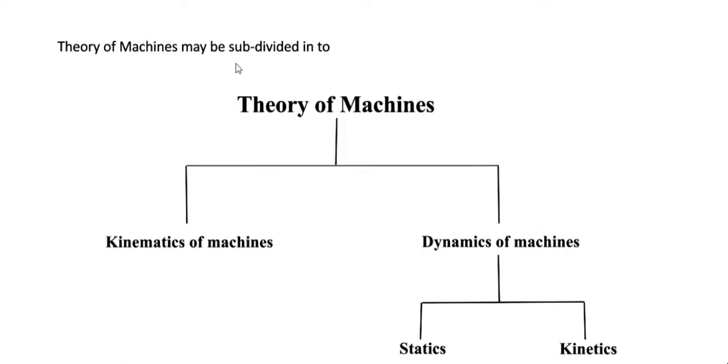Theory of machines may be subdivided into two types: kinematics of machines and dynamics of machines. In dynamics of machines we have two types: statics and kinetics.